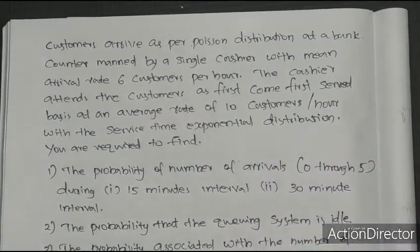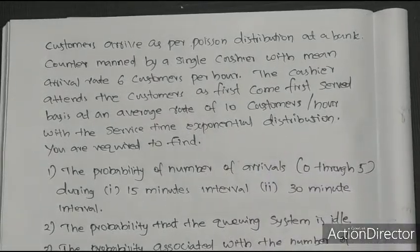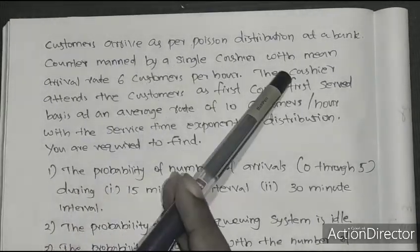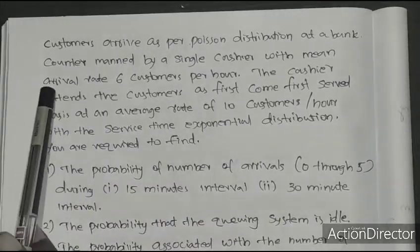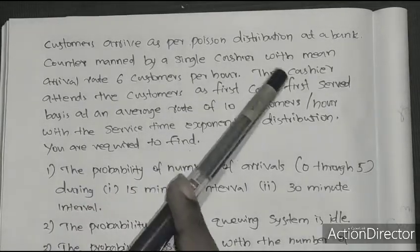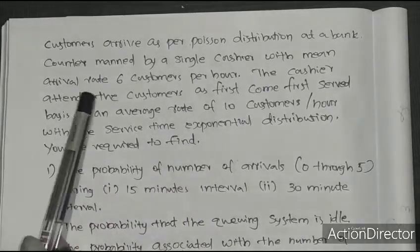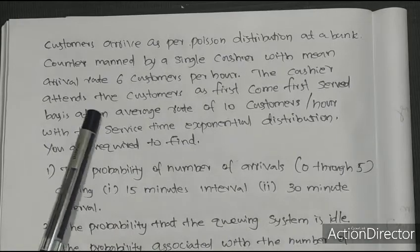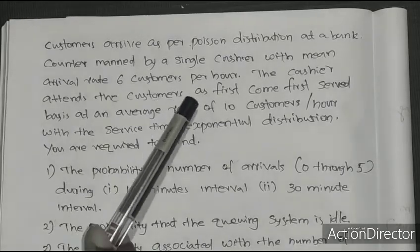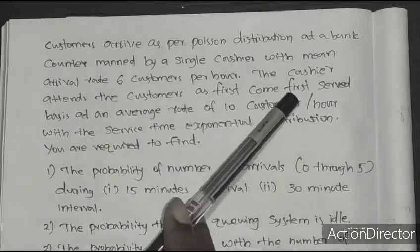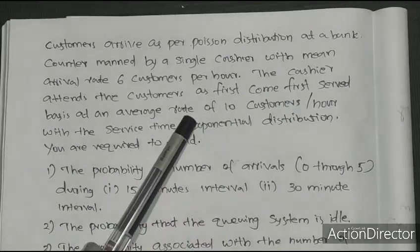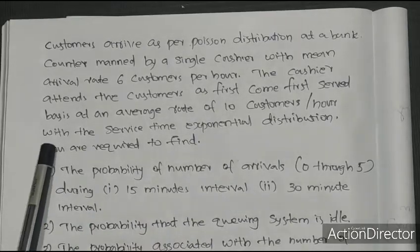Hi all. I'm going to tell you about the first problem. Customers arrive as per Poisson distribution at a bank manned by a single cashier, with mean arrival rate of 6 customers per hour. The cashier attends customers on a first come first served basis at an average rate of 10 customers per hour.